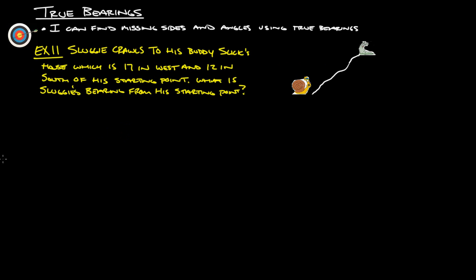Let's take a look at an example here. Sluggy crawls to his buddy Slick's house, which is 17 inches west and 12 inches south of his starting point. What is Sluggy's bearing from his starting point? We'll draw a triangle. Here's true north. We want to come up with what's this angle right here. If we can figure out this angle here, we can figure out what the bearing angle is.